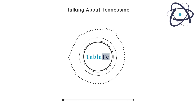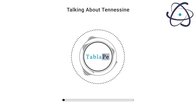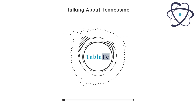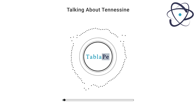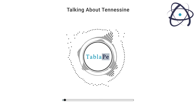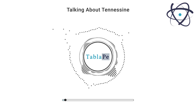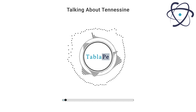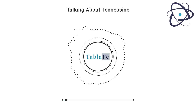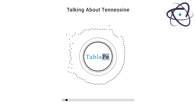Welcome, dear listeners, to another episode of Talking About Elements. I'll be your guide on this journey through the periodic table, and today we're setting our sights on an element that is both rare and remarkable: Tennessine.